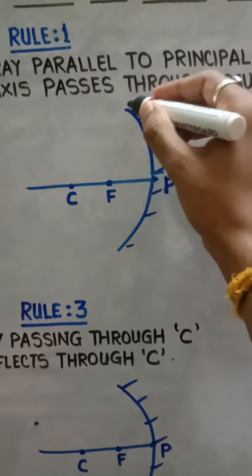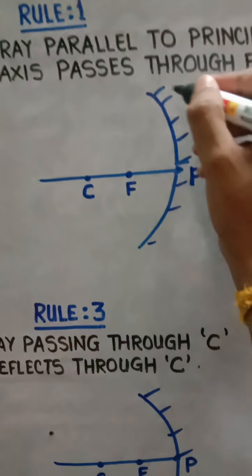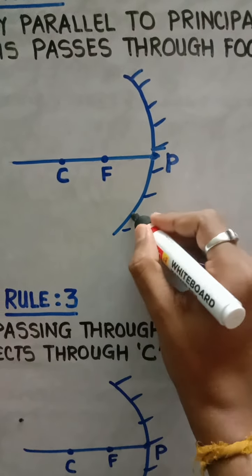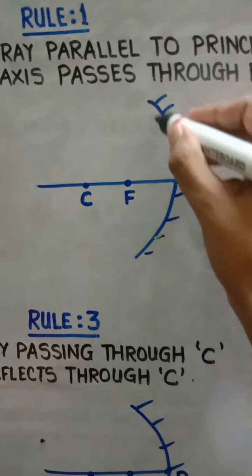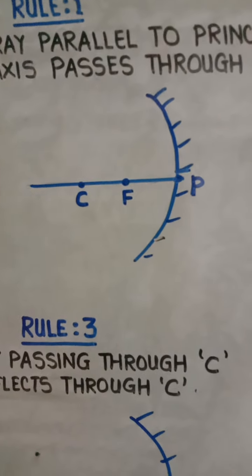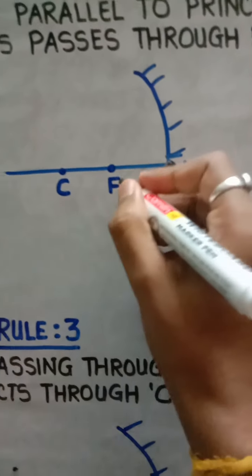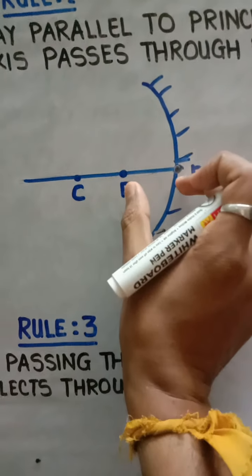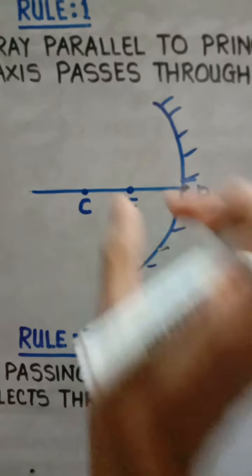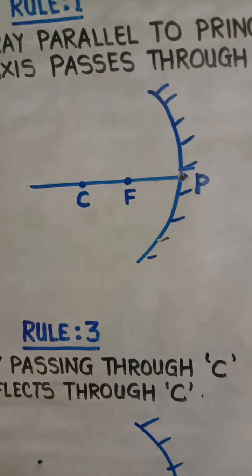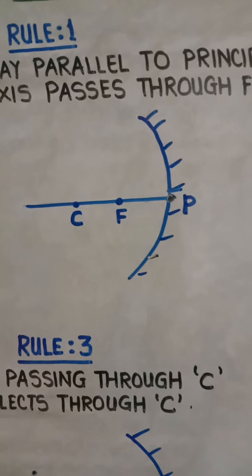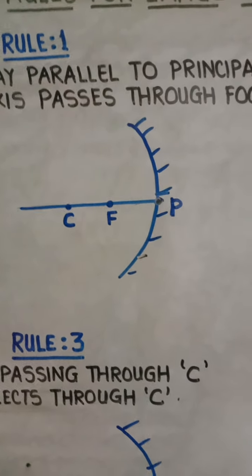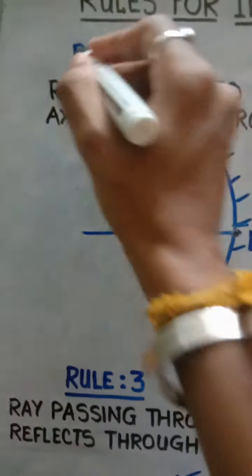Whenever we are drawing an image formation, draw the mirror properly. Since it's a concave mirror, keep the outside part as non-reflecting and the inner part as reflecting. Mark the pole, focus, and center of curvature properly, making sure the distance from pole to focus and focus to center of curvature are the same. Use a scale to complete the figure.